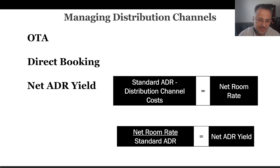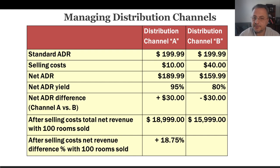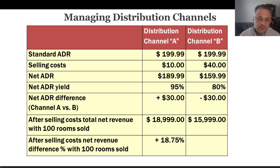In Chapter 8's Apply What You Know video, I have one problem and solution. Looking at the examples, channel A gives us better value. Can we say a higher net ADR yield is always better for us?